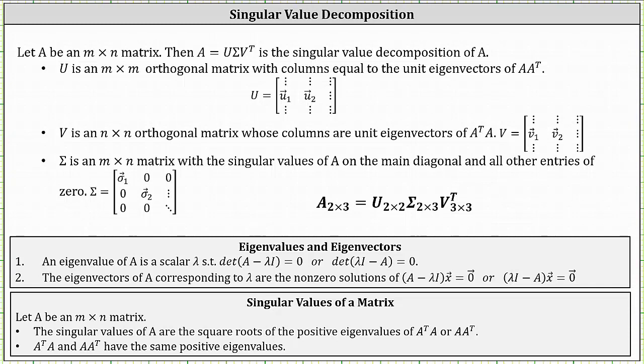Welcome to a lesson on how to determine the singular value decomposition of a given matrix. Let A be an M by N matrix; then A equals U times sigma times V transpose is the singular value decomposition of A.